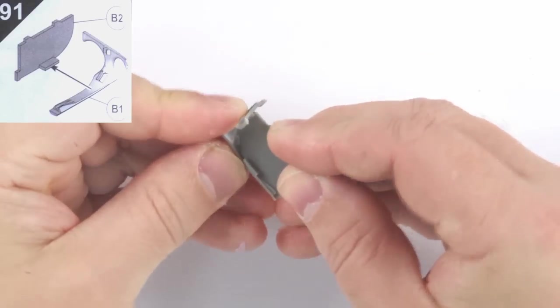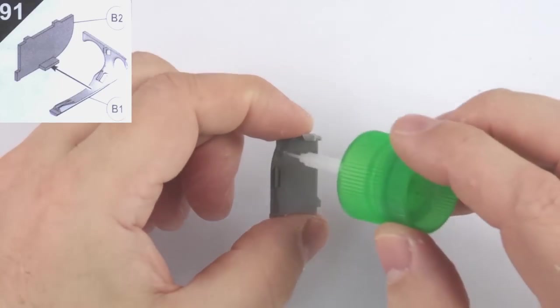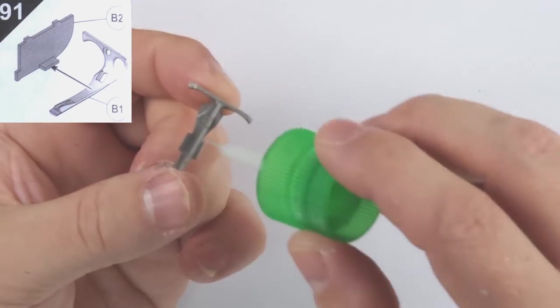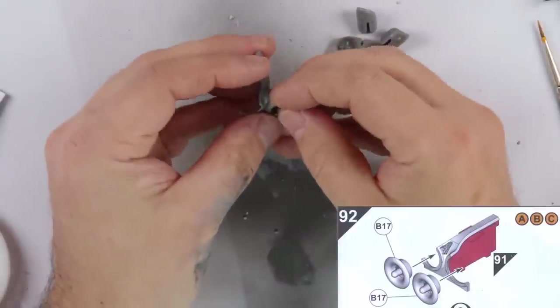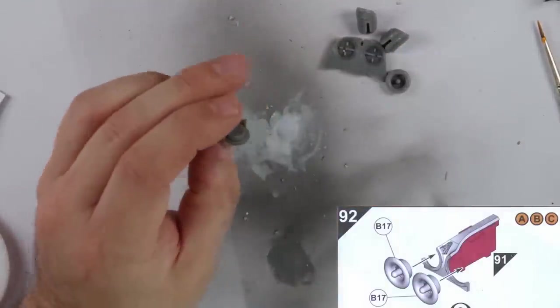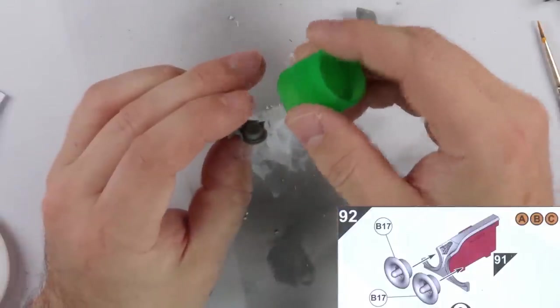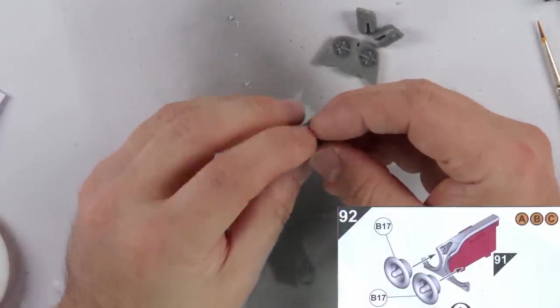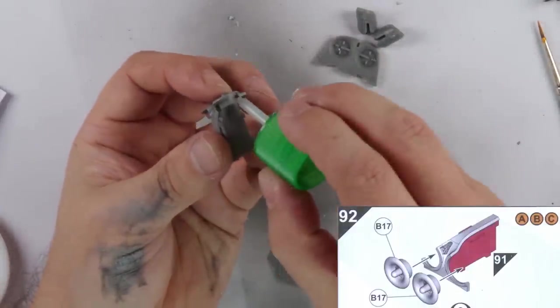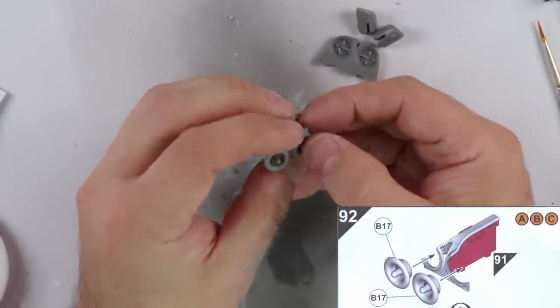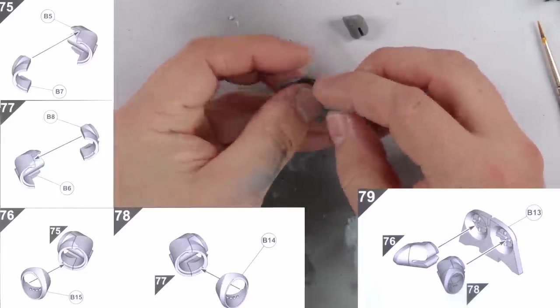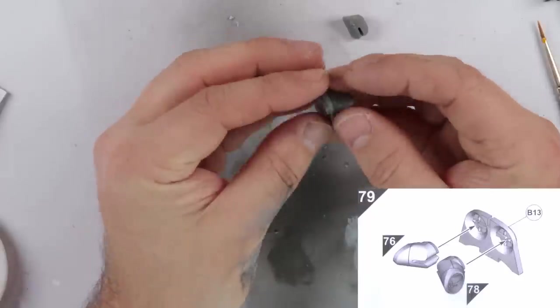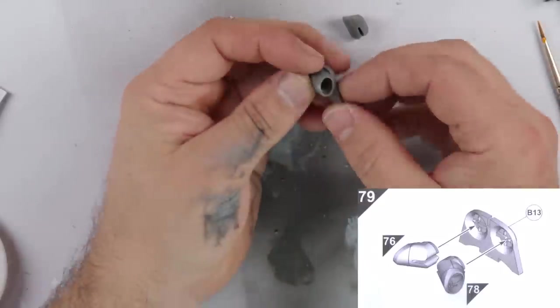Back to construction and step 91 for the engine assembly frame. Air intakes next, which again differ depending on the aircraft variant. Steps 75 to 79 all deal with the exhaust assemblies, which go together without any issues and are cleverly engineered to give the correct angle.